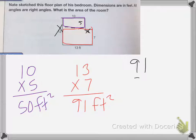And I'm going to add those together. So I have 91 plus 50. 1, 9 plus 5 is 14. So my answer is 141 feet squared.